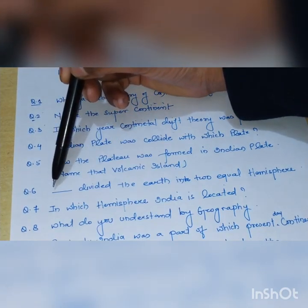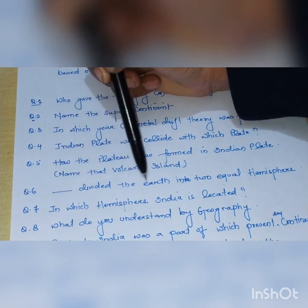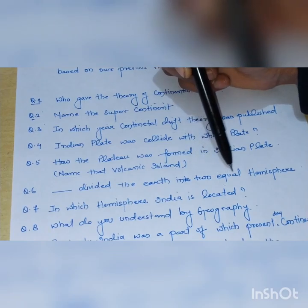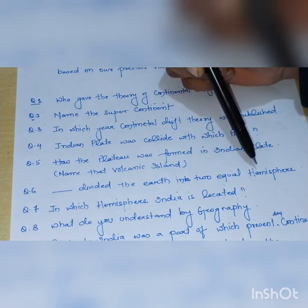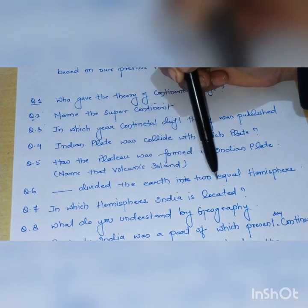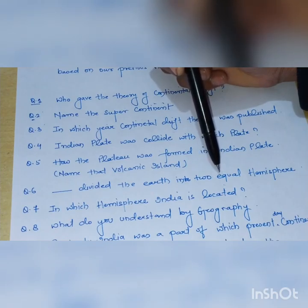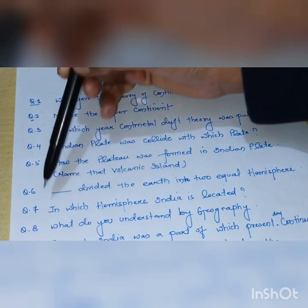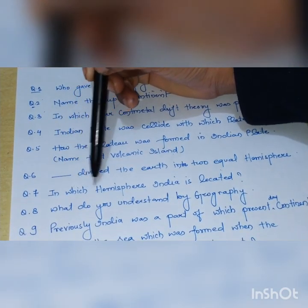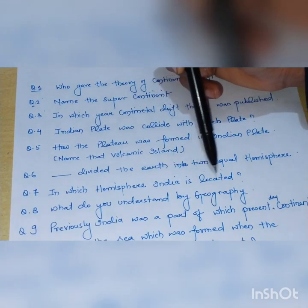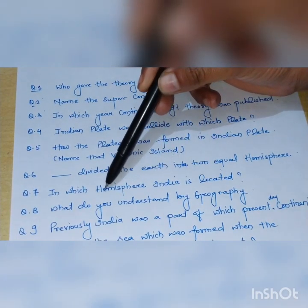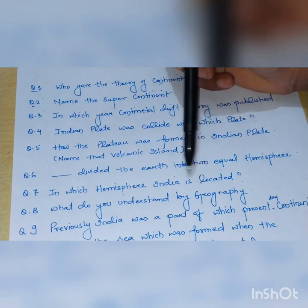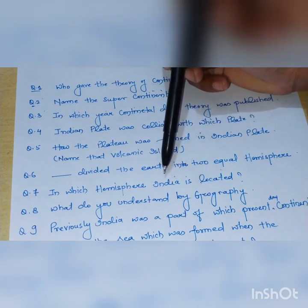Sixth question: what divides the earth into two equal hemispheres? Answer is the equator. Next question: in which hemisphere is India located? Answer is the northern hemisphere.